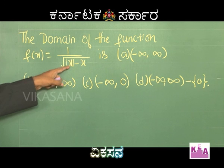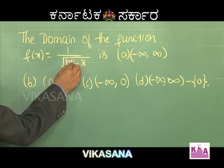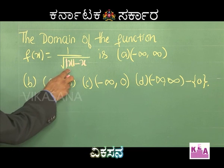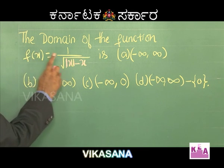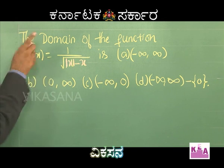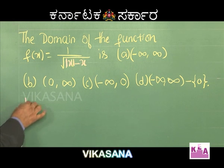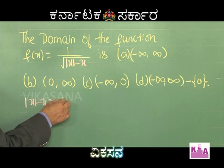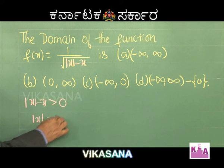For f(x) = 1/√(|x| - x), the expression |x| - x must be strictly positive (greater than zero), because if it equals zero the denominator becomes zero, and the square root of a negative number is imaginary. So condition: |x| - x > 0, which means |x| > x.